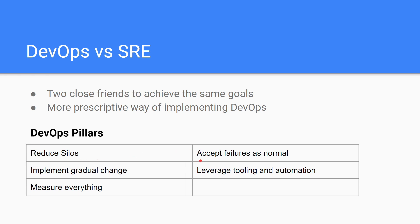The second pillar is accept failures as normal. In DevOps, when you make changes more frequently, you have to accept that failures are normal. SRE addresses this through postmortem culture — the same failure should not happen more than once. For example, if a bug occurs in production today, SRE preaches that the exact same issue should not recur. That's an important metric to measure.